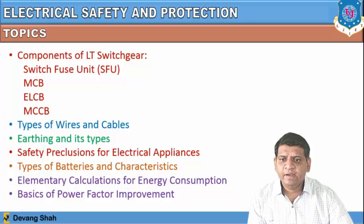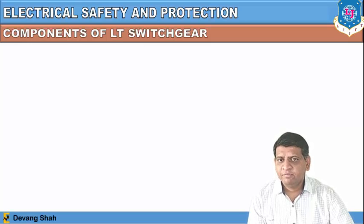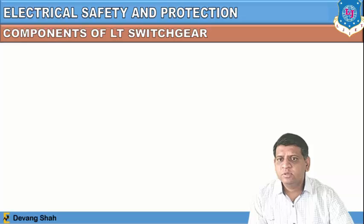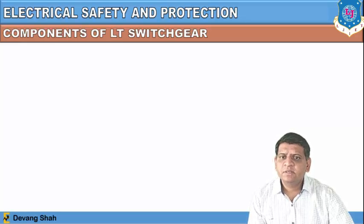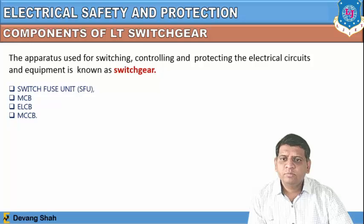Let us first start with the components of LT switchgear. We use those components to protect our electrical circuits and appliances that we use in real life — like television, refrigerator, microwave oven, electrical heating systems — all residential home appliances as well as industrial appliances. The apparatus used for switching, controlling and protecting electrical circuits and equipment is known as switchgear.